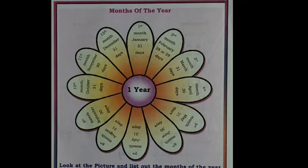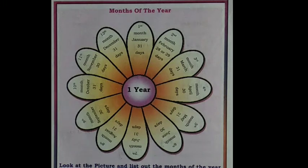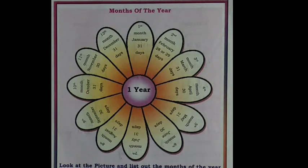January, February, March, April, May, June, July, August, September, October, November, December. There are 12 Months of the Year.